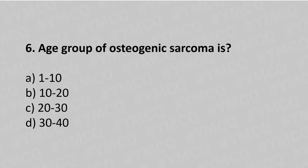Now let's move to question number 6. The peak age group of osteogenic sarcoma is — option A: 1 to 10, option B: 10 to 20, option C: 20 to 30, option D: 30 to 40. The answer is option D: 30 to 40.